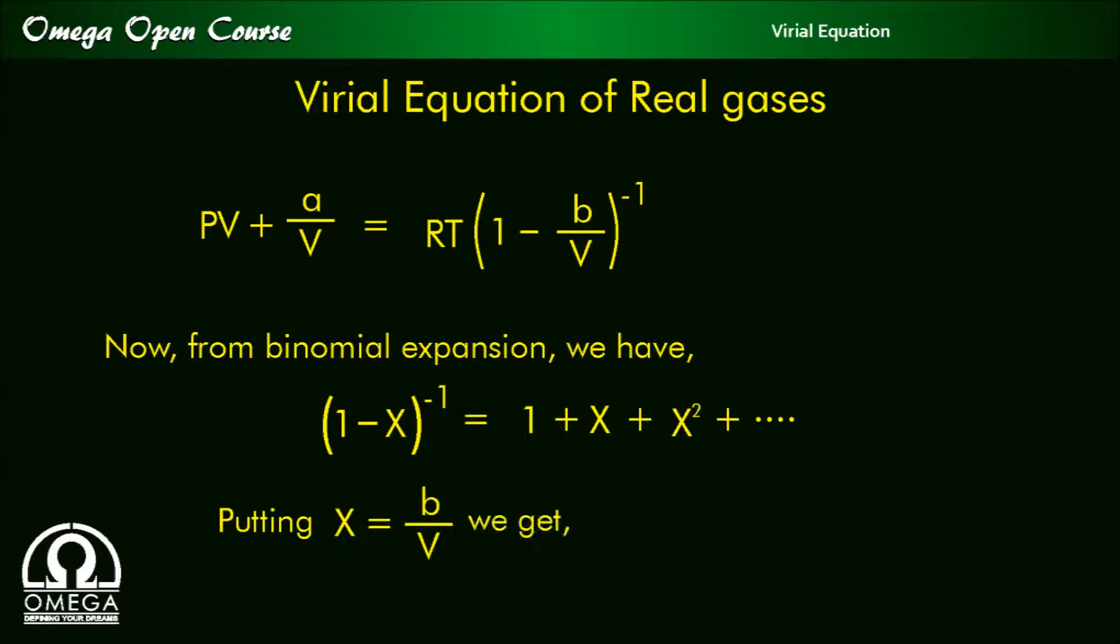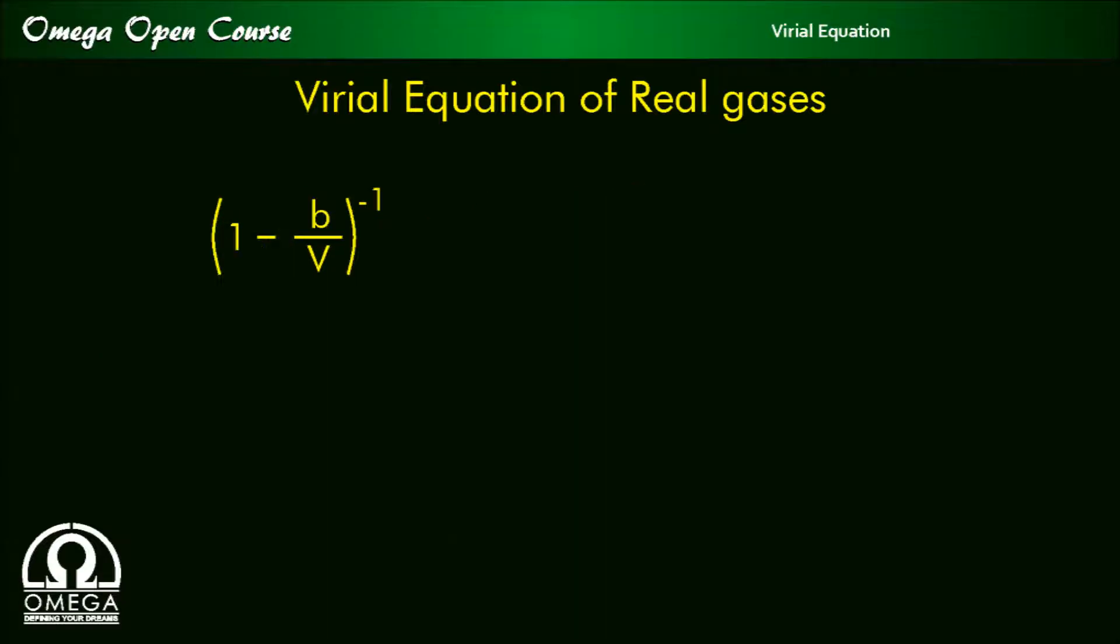Putting x is equal to b by v, we get 1 minus b by v to the power minus 1 is equal to 1 plus b by v plus b square by v square up to infinity.